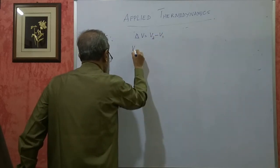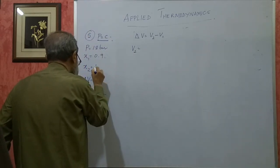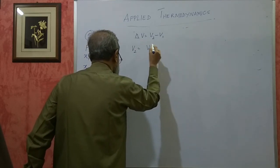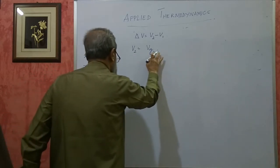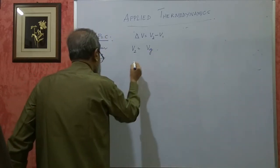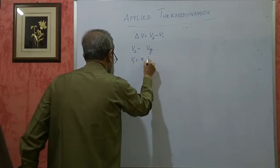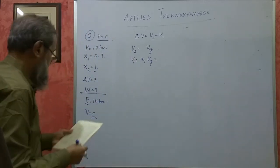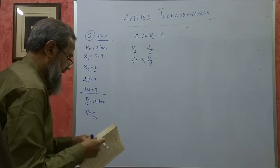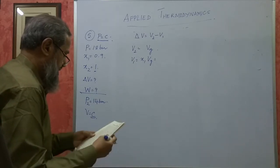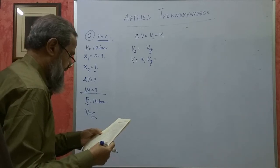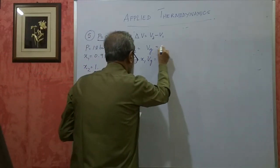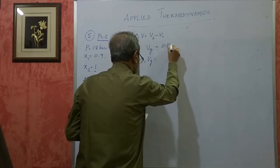Delta V means change in volume: V2 minus V1. V2 will be VG2 because x2 = 1 (dry saturated), and since P1 = P2, it is simply VG. V1 = x1 · VG. For the given pressure of 18 bar, from the steam table, VG = 0.1104 m³/kg.